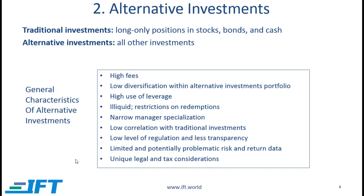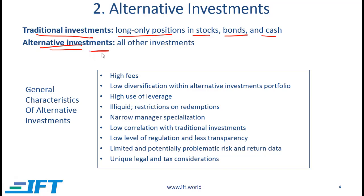On this slide, we will define alternative investments and then talk about their general characteristics. To understand alternative investments, let us make sure we know what is meant by traditional investments. By traditional investments, we mean long-only positions in stocks, bonds, and cash. Everything else then becomes alternative investments, and on the previous slide we looked at the major categories: real estate, hedge funds, private equity, and commodities. In this box you can see the various characteristics of alternative investments — keep in mind that this list is a generalization.